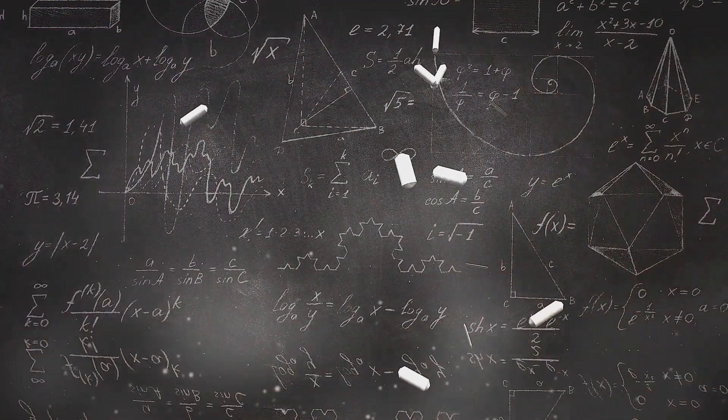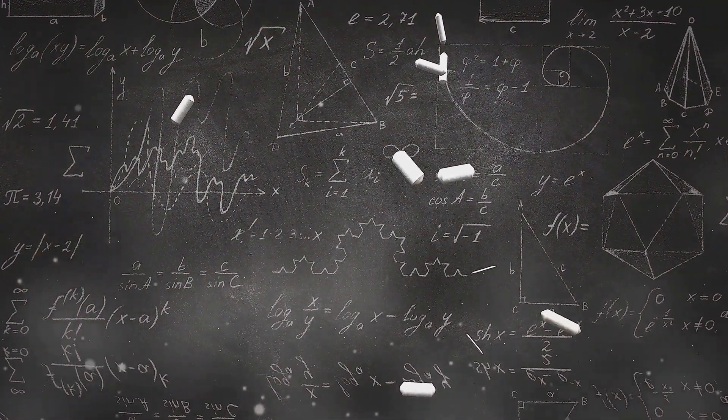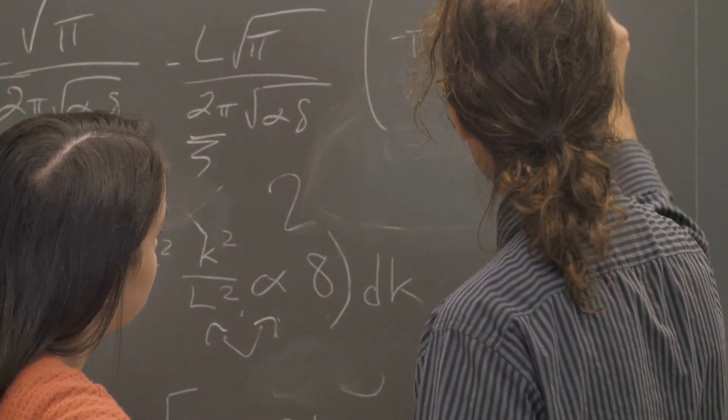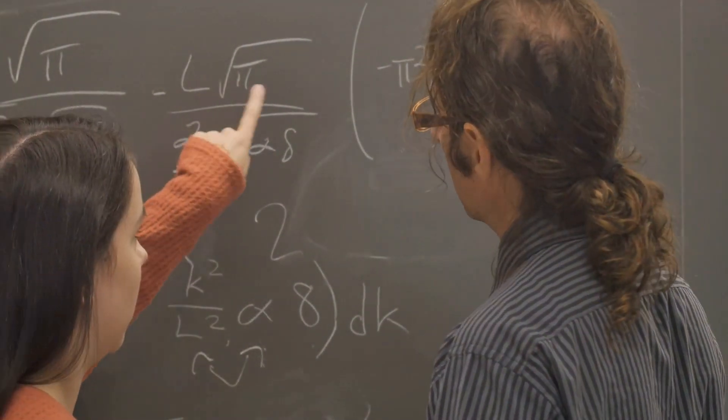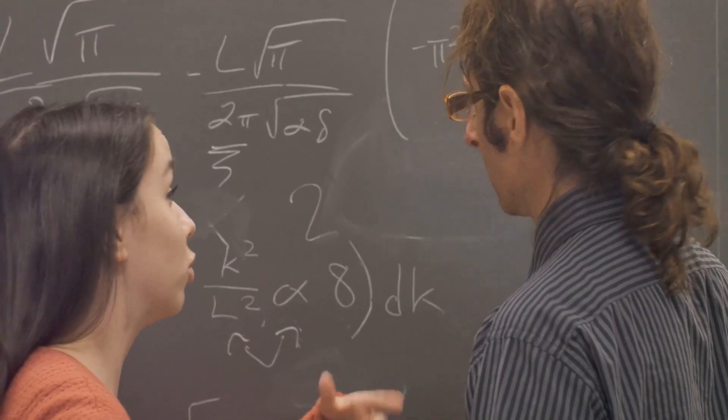To recap, we've navigated through the history of pi, explored the various methods used to calculate it, and revealed the intriguing 100th digit. Each step in this journey has its own story and significance.